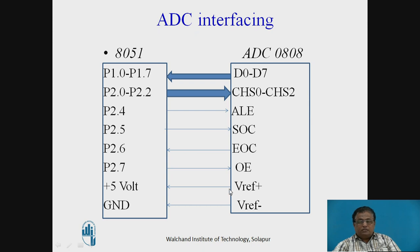V-reference plus is connected to +5V and V-reference minus is connected to ground, so the input voltage will vary from 0 to +5V. For an input of 0V the digital output will be 00, and for +5V the digital output will be FF.